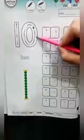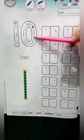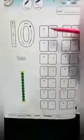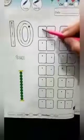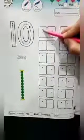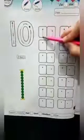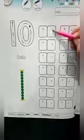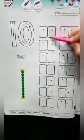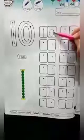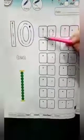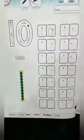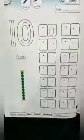Let's write again. Start from the big dot, go down and down — 1. Start from the big dot, go round and round — 0. 1 and 0 makes 10. Now you can solve page number 14 and 15 by yourself. Jazakallah.